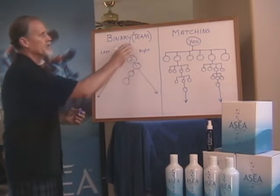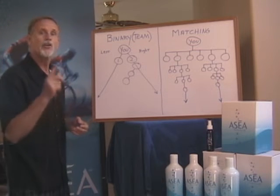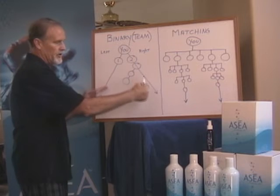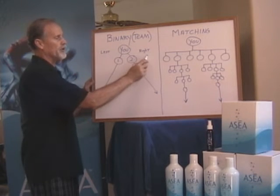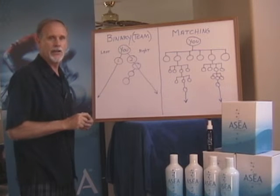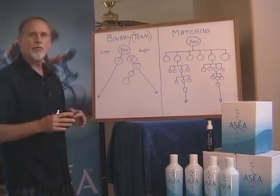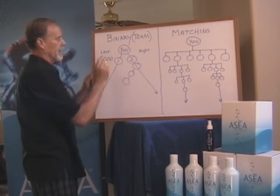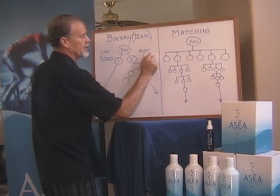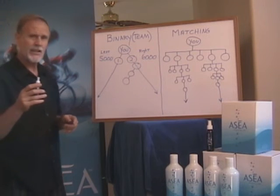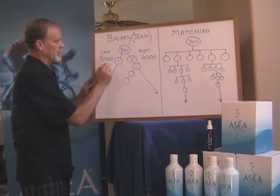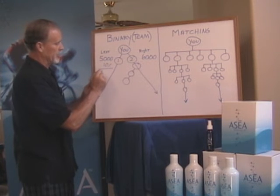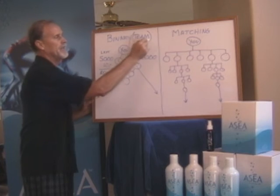Back over here on our binary side, this is where our team commissions get paid every single week. Regardless of whether you sponsored these people or somebody else did, every time an order drops into one of your right or left legs, your binary volumes mount up. Each week at the end of the commission period, the computer is going to add up all the sales volume in both of those legs. Let's assume your left side was $5,000 and your right side was $6,000 in that given week — the computer is going to pay you 10% every single week on the lesser leg. So if this is your lesser leg with $5,000, at 10% you'd get a check for $500 in team commissions.